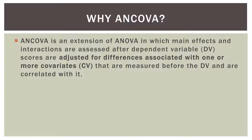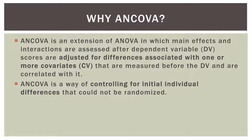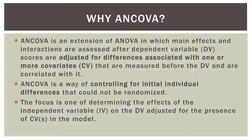Let's take that definition step by step. ANCOVA is an extension of ANOVA — main effects and interactions are assessed after the dependent variable scores are adjusted. The dependent variable scores, in this case the study skills assessment, are adjusted for differences associated with one or more covariates, in this case GPA, that are measured before the dependent variable and are correlated with it. So the covariate, GPA, must be correlated with the dependent variable, study skills. ANCOVA is a way of controlling for initial individual differences that could not be randomized — GPA just came along with the students in the study.